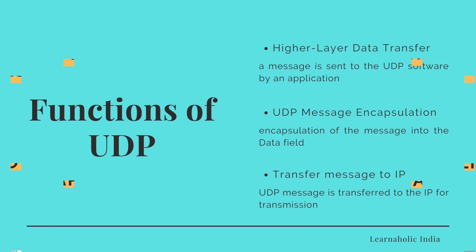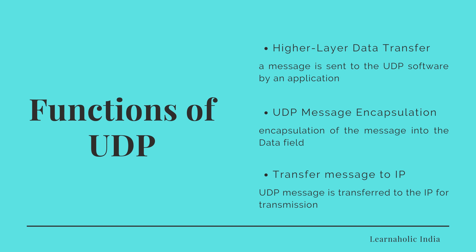Now let's see the functions performed by UDP. The main task of UDP is to take data from higher layer protocols and place it into UDP messages, which are then moved to the IP for transmission. It follows specific steps: First is higher layer data transfer — a message is sent to the UDP software by an application. Next is UDP message encapsulation, which includes encapsulating the message into the data field, adding the UDP header with source and destination port fields, and computing the checksum value. Finally, the UDP message is transferred to the IP for transmission.